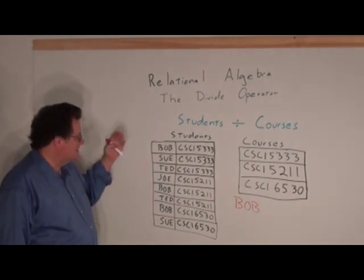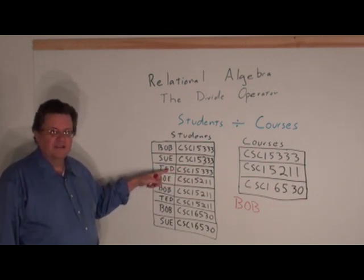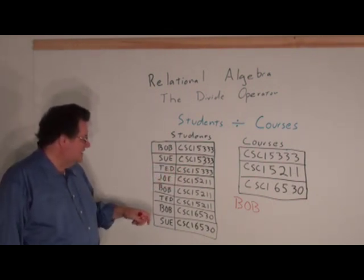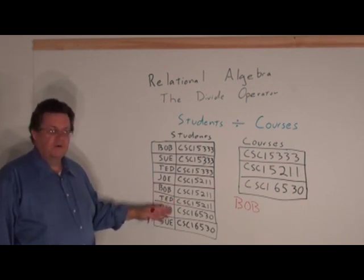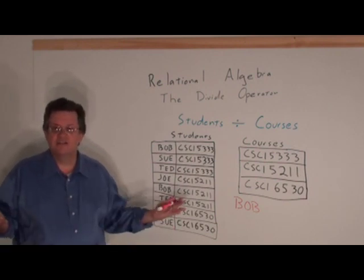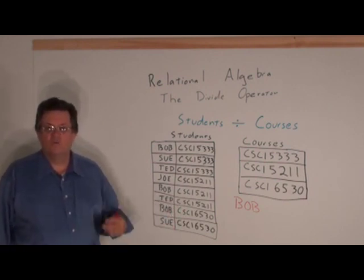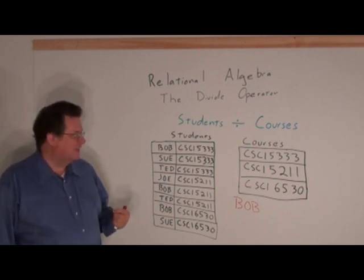Next we go to let's say Ted. CSCI 5333 and Ted has taken that class. CSCI 5211, Ted has taken that class also. But if we come down here for CSCI 6530 there's no Ted. So Ted like Sue has taken two out of three classes and would not be in our solution set.